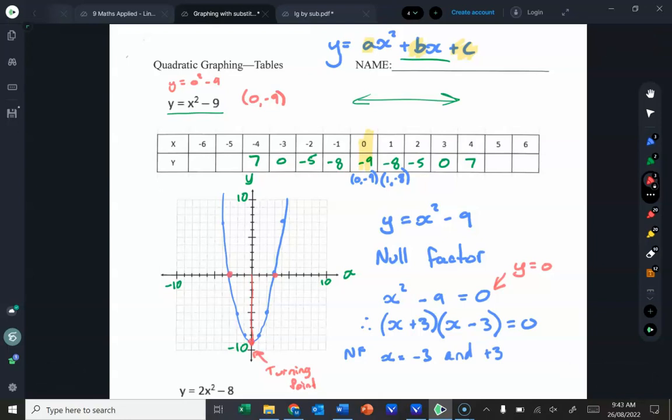So once we've got our heads around this, we don't need to plot all of these points, we only need a few significant points. The ones we'd be looking for are where it crosses the x axis, usually in two spots, but sometimes only in one and sometimes not at all.